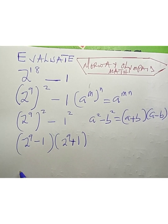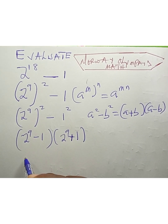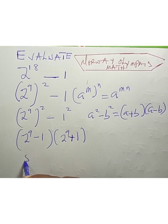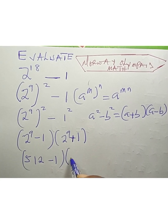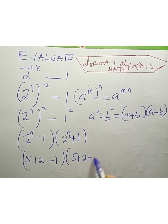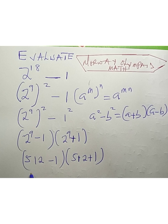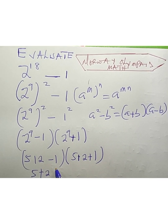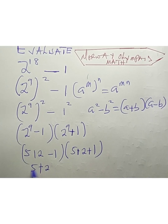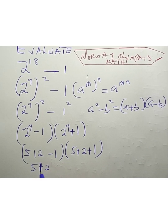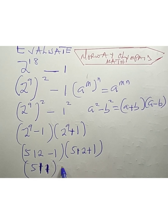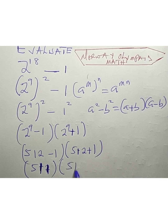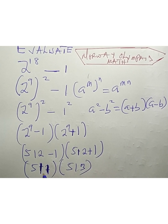Now the result: 2 raised to power 9 is 512. So we have (512 minus 1) times (512 plus 1), which gives us 511 times 513.